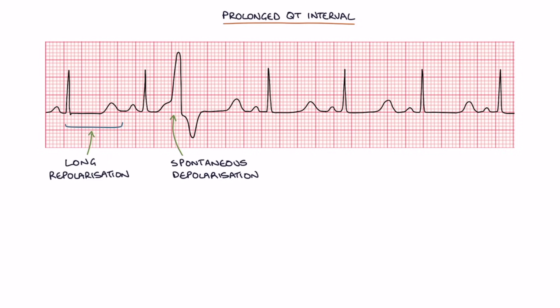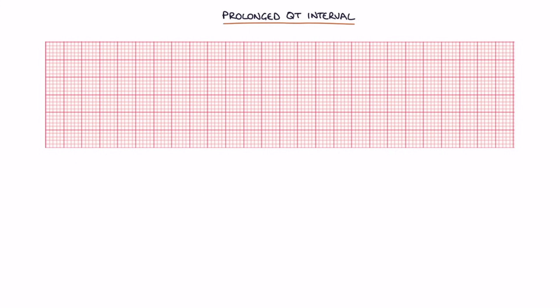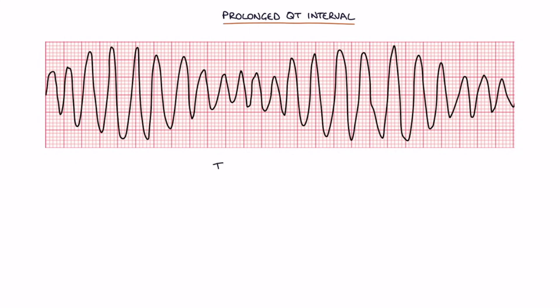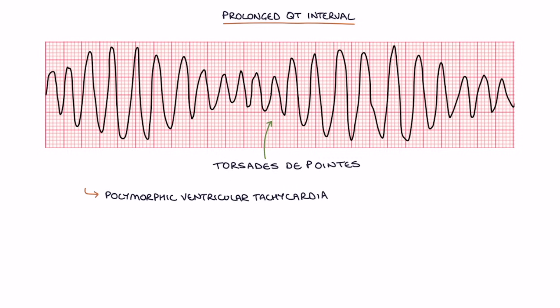These abnormal spontaneous depolarizations occurring before repolarization are known as after-depolarizations. They spread throughout the ventricles, causing a contraction before proper repolarization. When this leads to recurrent contractions without normal repolarization, it's called torsade de pointes. Torsade de pointes is a type of polymorphic ventricular tachycardia — translating from French as 'twisting of the spikes.' On an ECG, it looks like ventricular tachycardia, but with the QRS complexes appearing to twist around the baseline, with height progressively getting smaller, then larger, then smaller again.